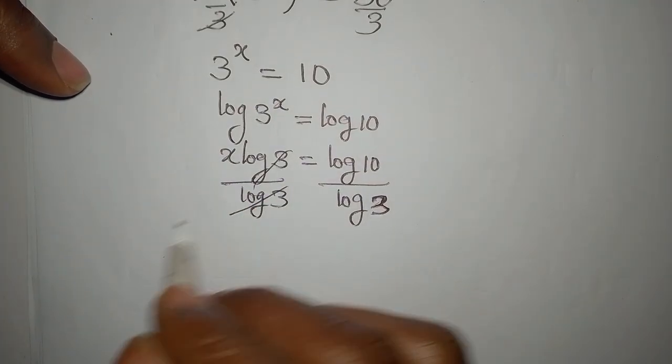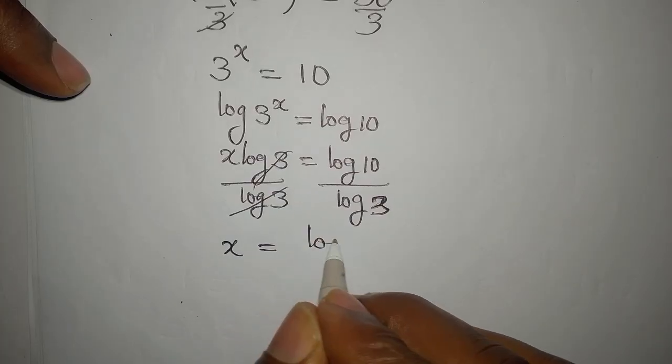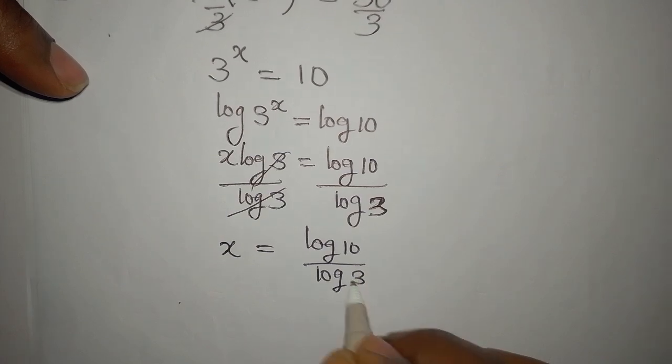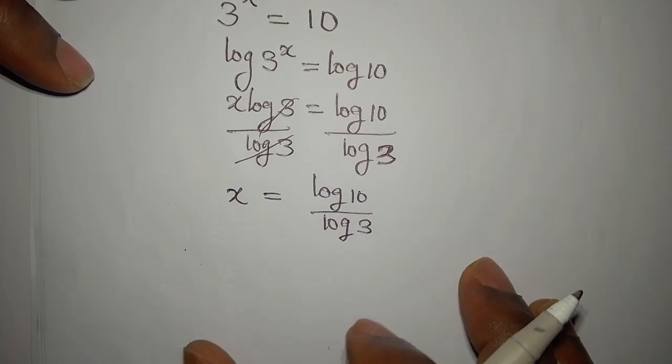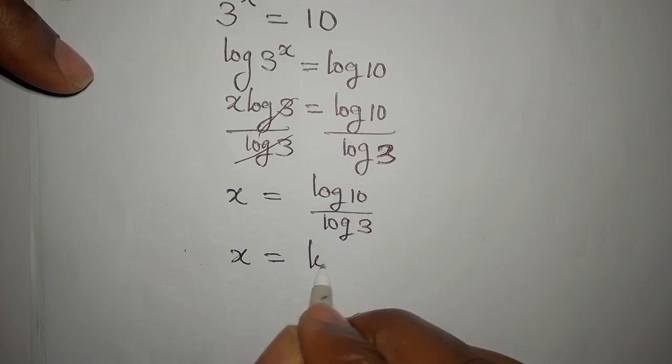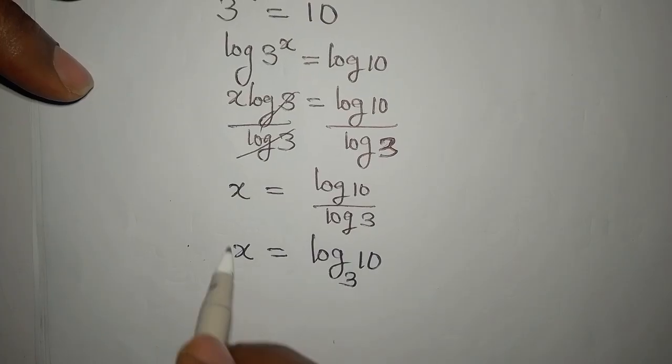Now this is going with this one. x will be equal to log 10 divided by log 3, but we can always change the base so that x will be equal to log 10 to base 3. So this is the value of x.